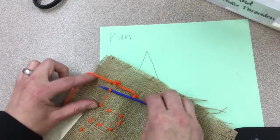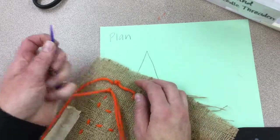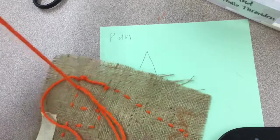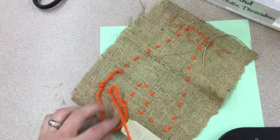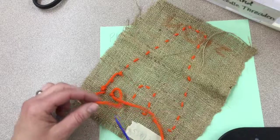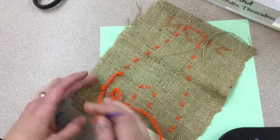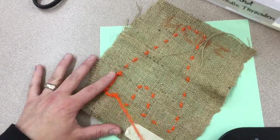And I'm going to pull my needle through, and that's going to start to make a loop. Now before I pull my loop tight, I'm going to put my needle through the back side of that loop and then pull it tight, and that makes a knot.